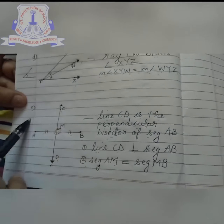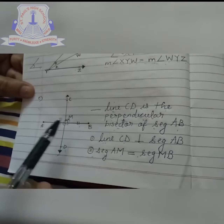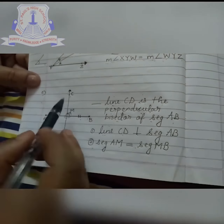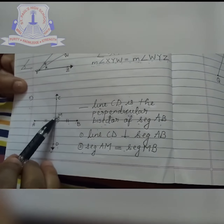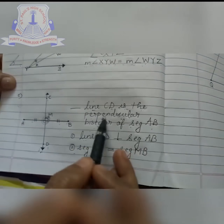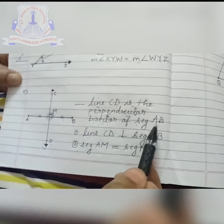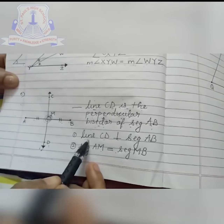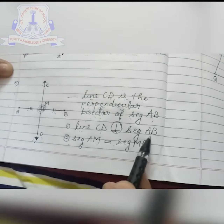The last figure shows that segment AB is divided by line CD. This sign indicates that it is a perpendicular, that is 90 degrees. So line CD is the perpendicular bisector of segment AB. This sign says that it is divided into two equal halves, so segment AM is equal to segment MB.